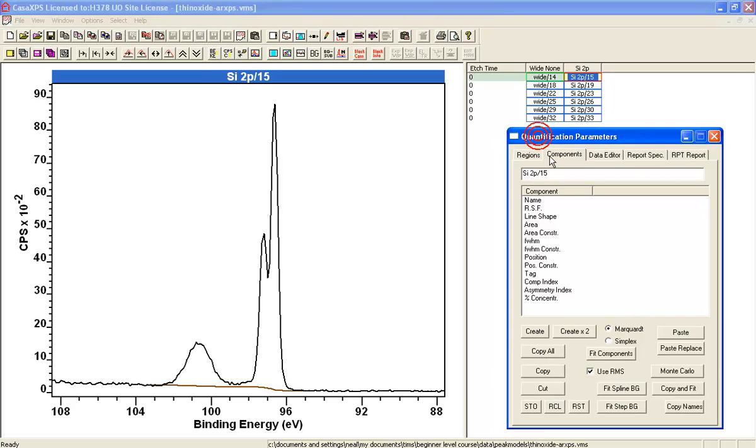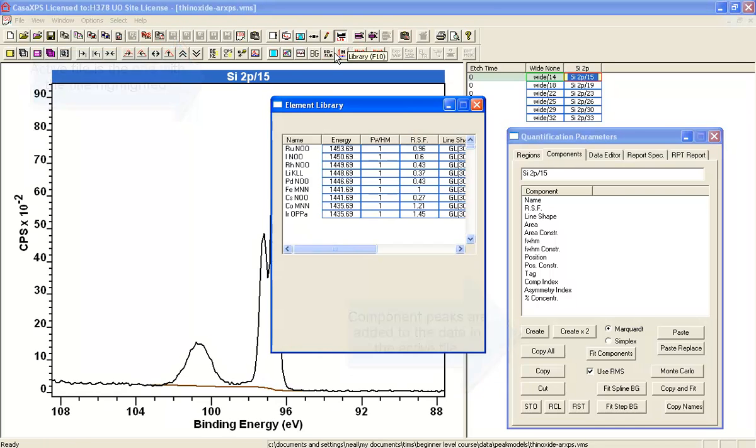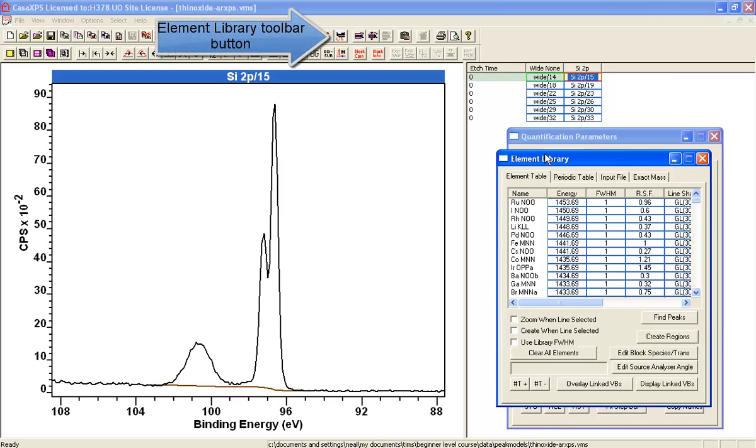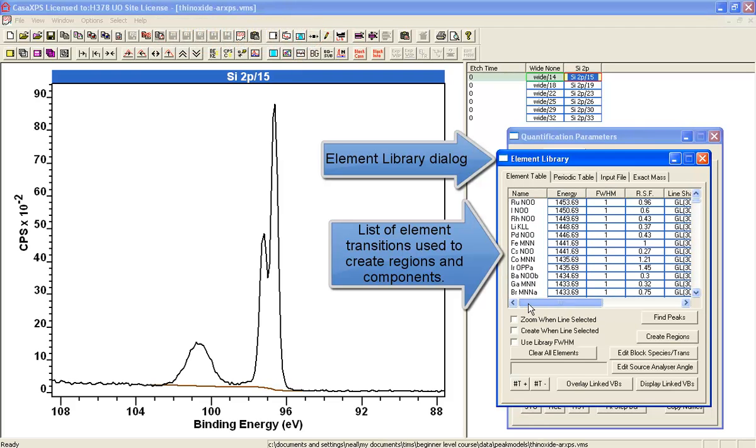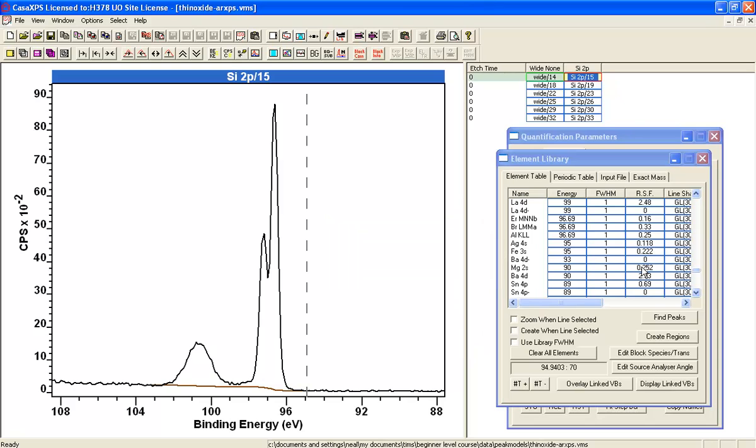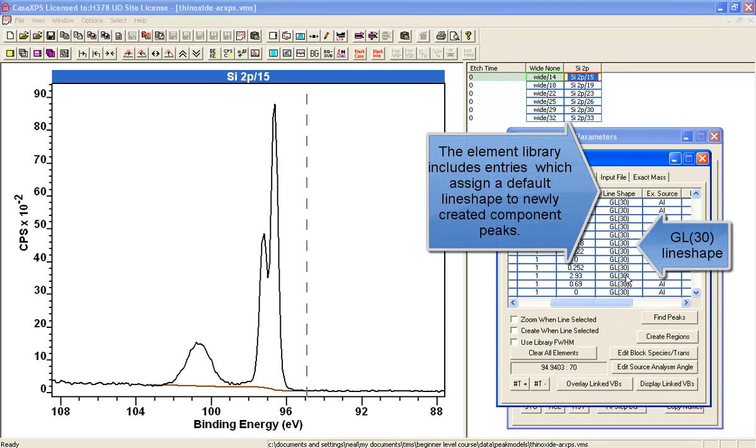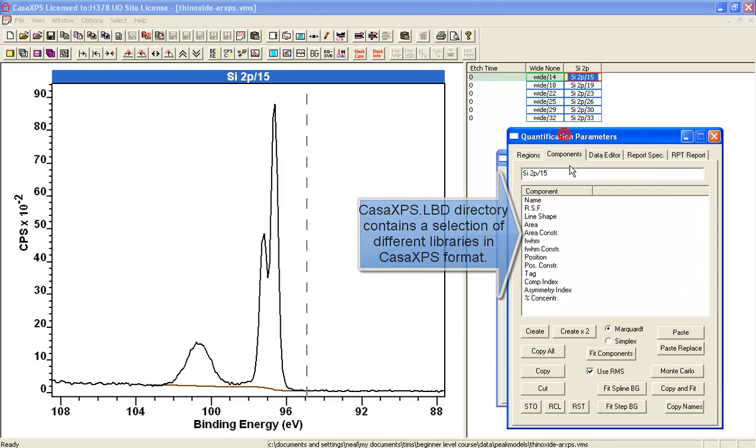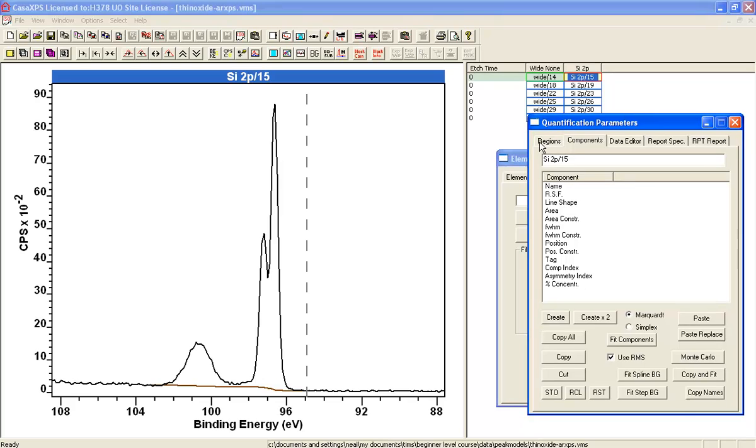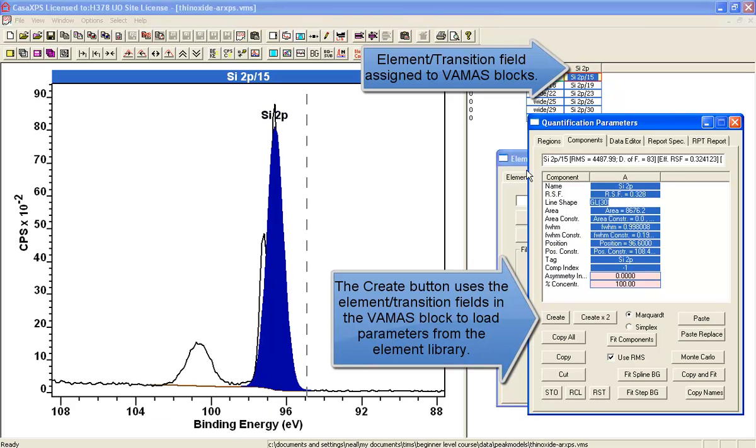We create these component peaks on the component property page, and before we start creating these peaks what we'll do is we'll load a library that will give us line shapes that are different from the default library. The default library has come in and it is a Kratos library, so these RSFs correspond to a Kratos axis instrument which corresponds to these data which were acquired on a Kratos system. The line shape in this library, they're all set to GL30, and just to illustrate that these can be changed, well first of all the consequence of having a GL30 in the element library is that when I create a peak, the GL30 comes in here and that's because it was in the element library.